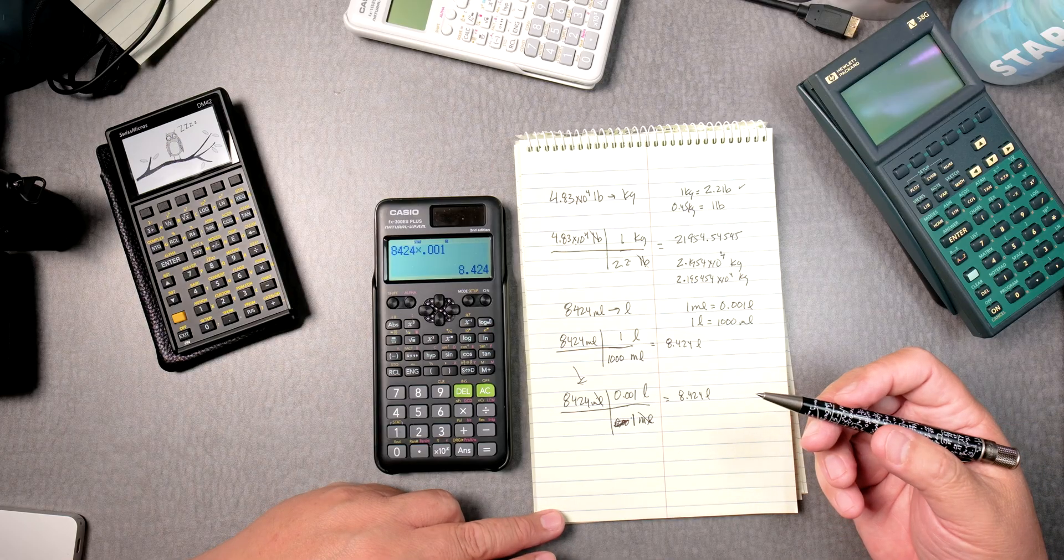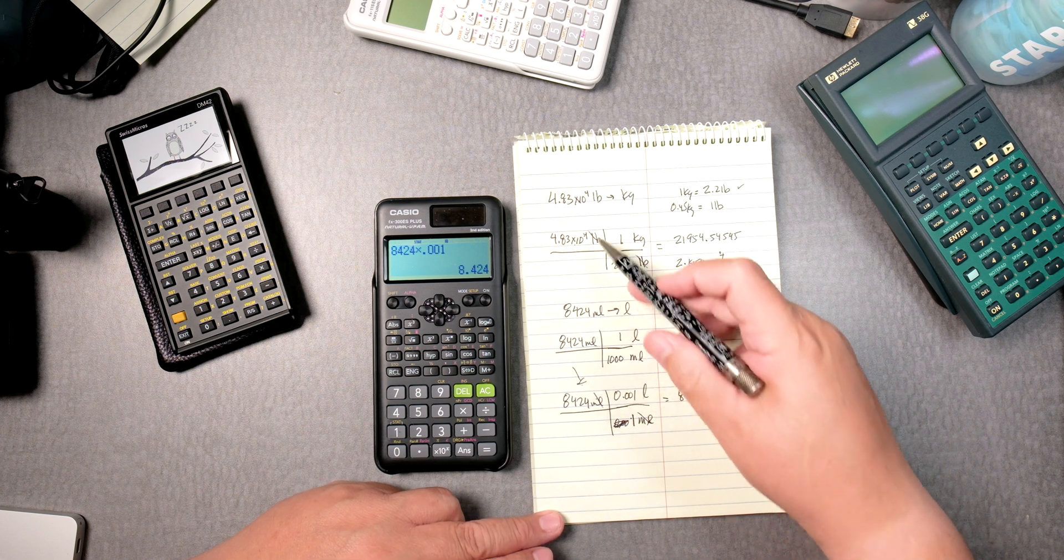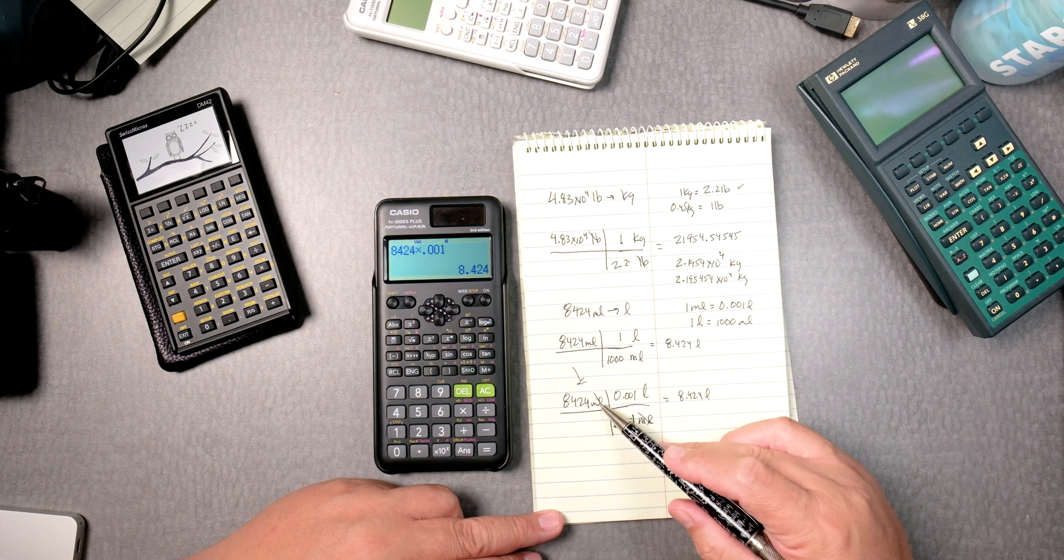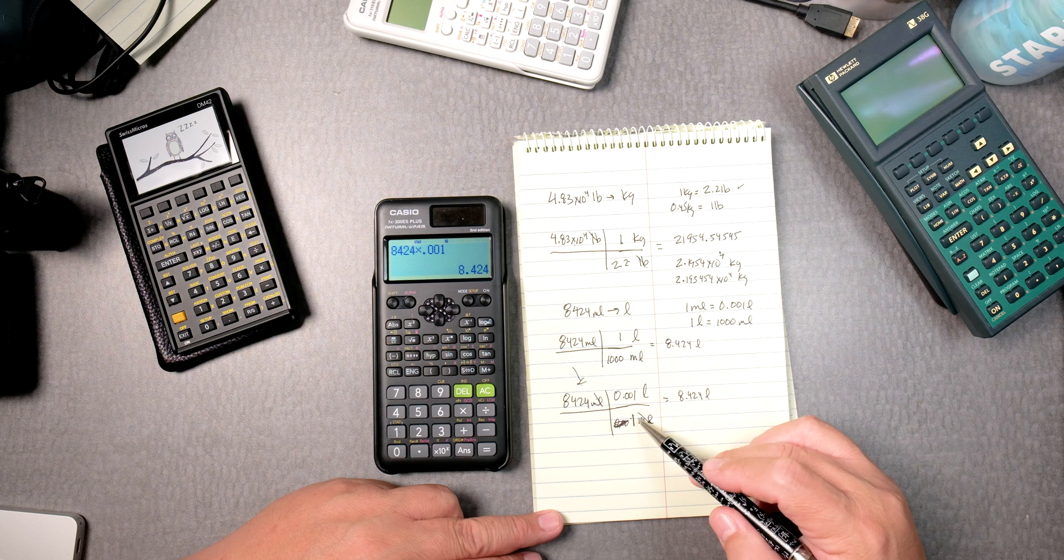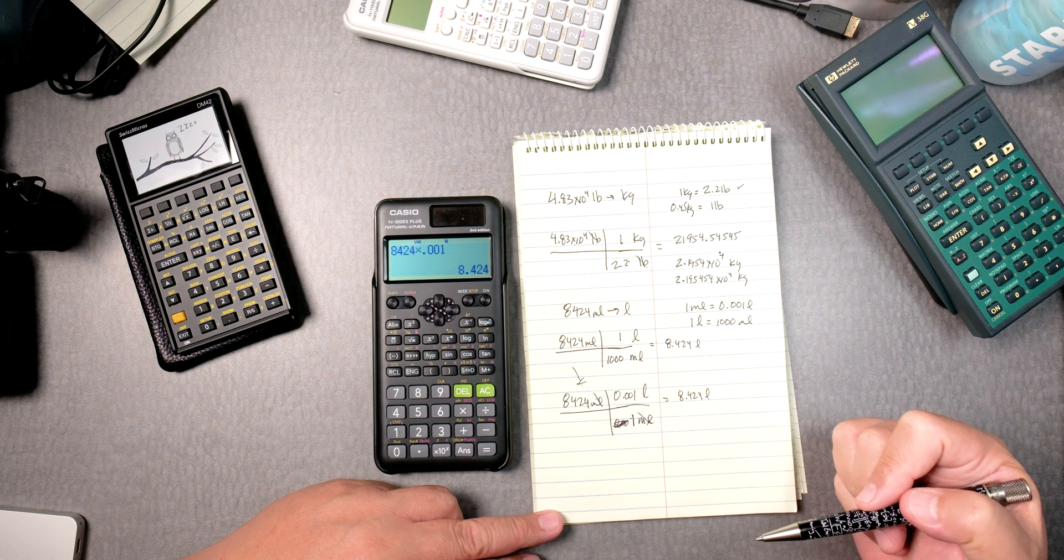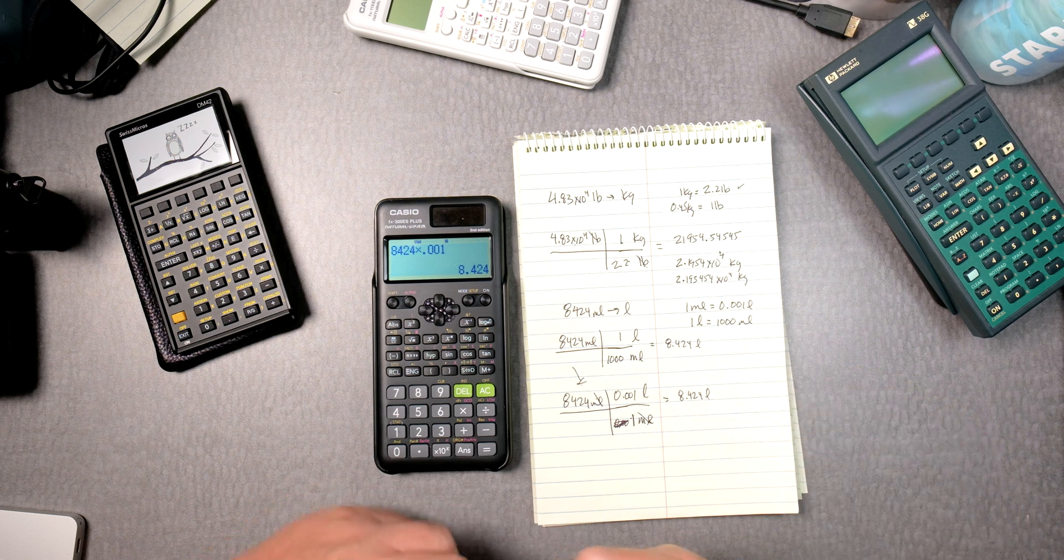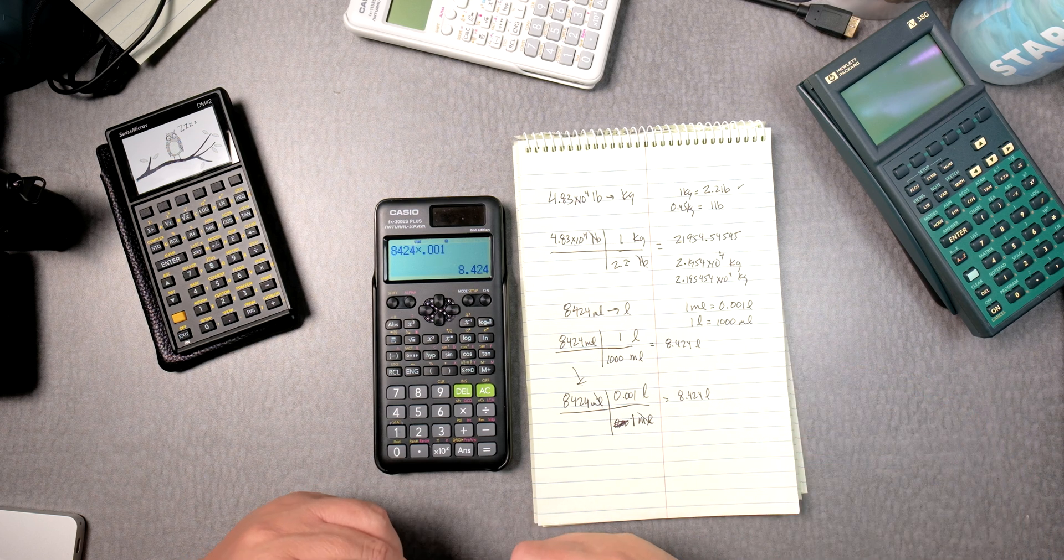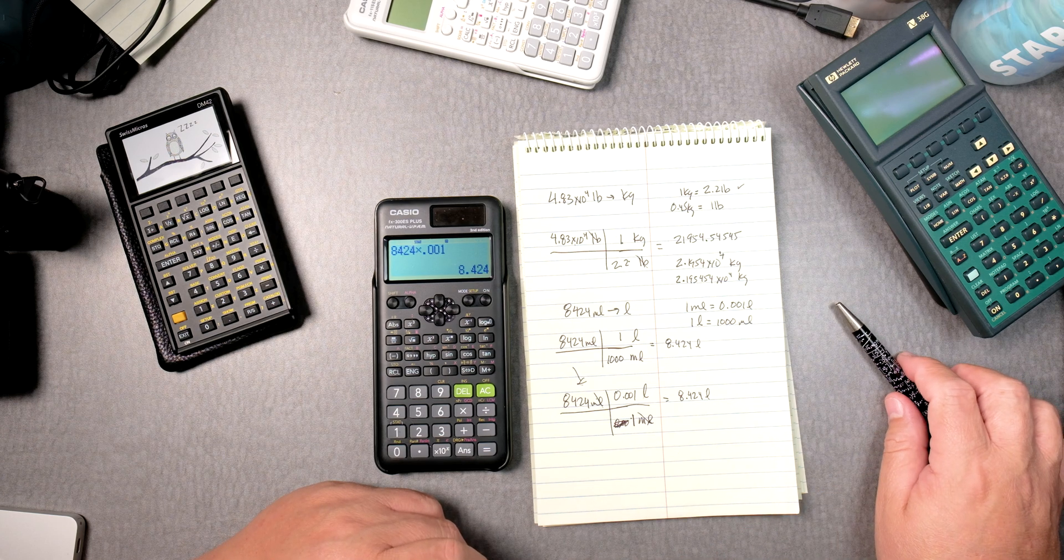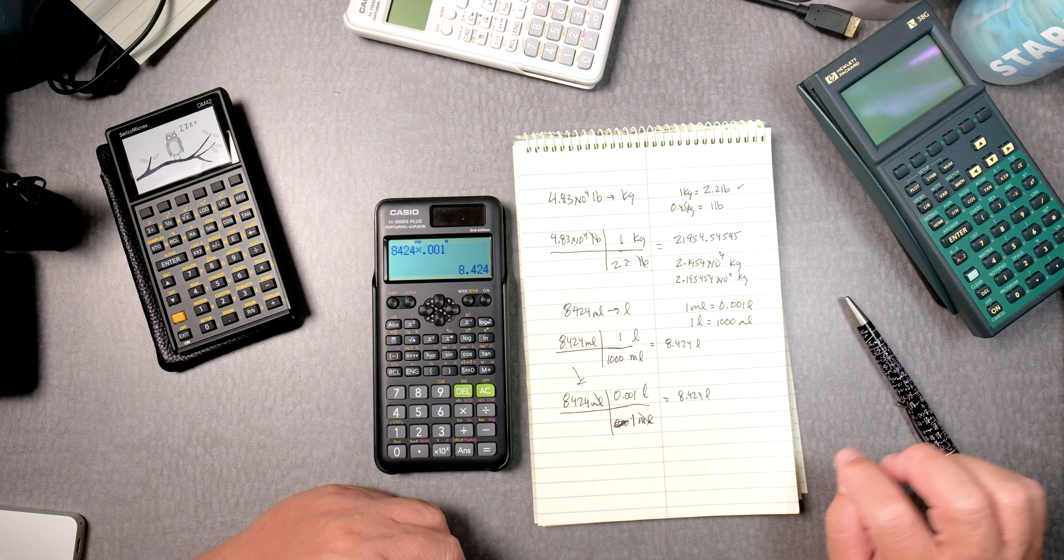So, the important thing is using this table convention, this cross, making sure the units are aligned this way, so you can cancel them, so you can get the final unit that you want. If you like this video, please give it a thumbs up. Please show it to your teacher. Please show it to your friends. And I hope you have a great semester. Bye-bye.